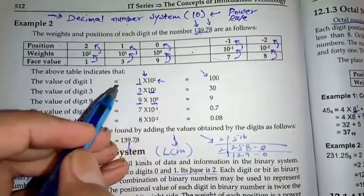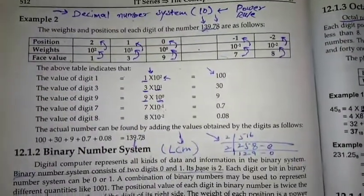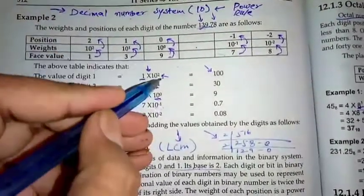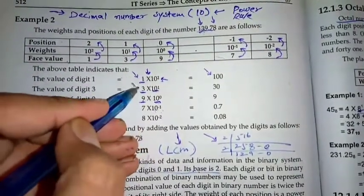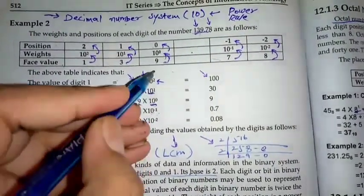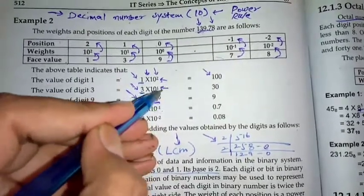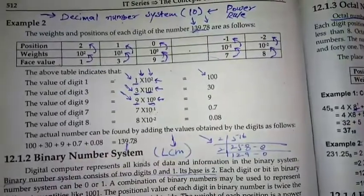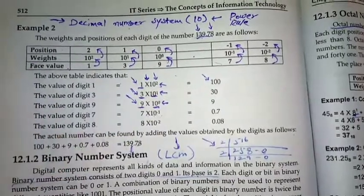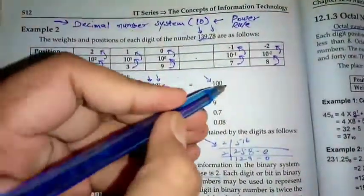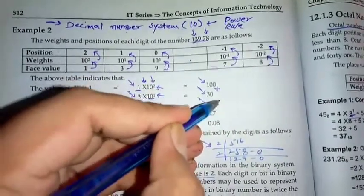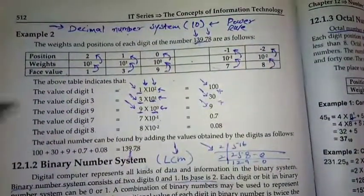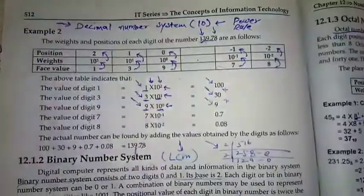Their base is 10. Their weight is 10. Their position is 2, 1, 0. We have first number, second number, third number. After multiplying, you have to add them. 1 plus 39. Okay.